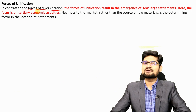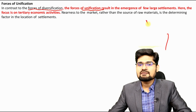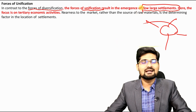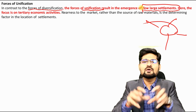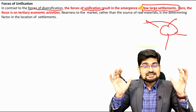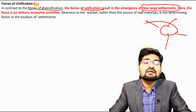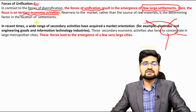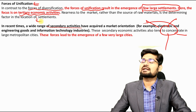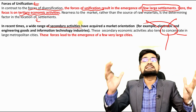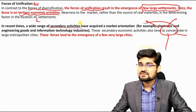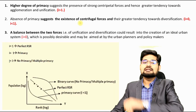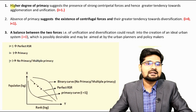In contrast, forces of unification bring resources from all sides, unifying and concentrating them, resulting in the emergence of a few large settlements. Forces of diversification lead to sporadic urban growth, while concentrated urban growth is based primarily on unification forces and tertiary service activities. In recent times, a wide range of secondary and tertiary activities have led to the development of big cities, world cities, and megalopolises.